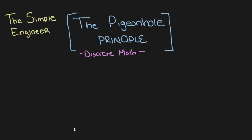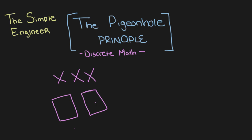For those of you who don't know, this is really a powerful tool in combinatorial mathematics. It basically states that if you have three pigeons and two available boxes, is it possible to put all three pigeons in these two boxes? The answer is yes, but with the condition that one box must contain at least two pigeons.